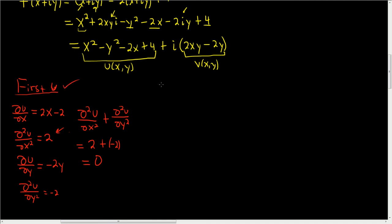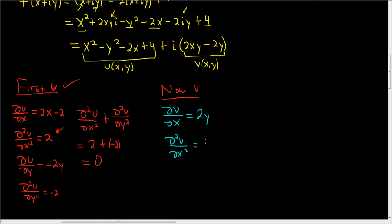Now let's do v. Taking the partial of v with respect to x, that's simply 2y. Taking the partial derivative again with respect to x, that is 0.